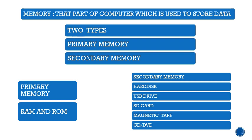Memory is that part of a computer or electronic machine which is used to store data. It has two main types: primary memory and secondary memory. Primary memory is the main memory of the computer — it is very necessary for the computer in order to process and run. Primary memory is of two types: RAM and ROM. It is used for starting up the machine and primary tasks.